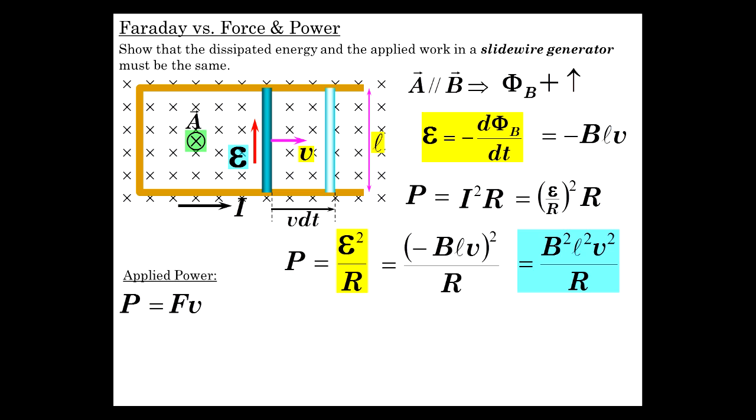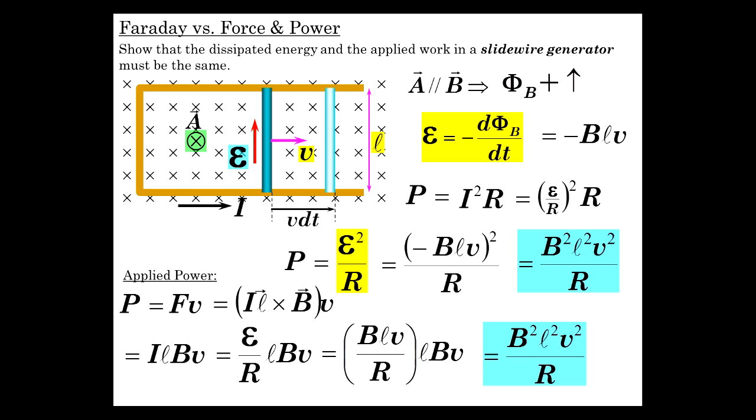Power is force times velocity. The force we have to overcome is simply the ILB force, the IL cross B force, which is just ILBv since everything's perpendicular here. So that's the size of the force and there's the velocity. Current is EMF over R, so it's EMF/R × LBv. And EMF, as we discovered, is Blv. So Blv/R × LBv, giving us B²l²v²/R. And conservation of energy has reigned supreme once again.